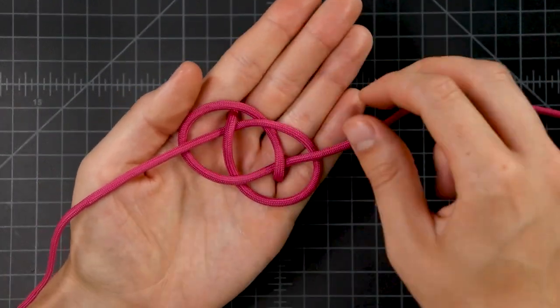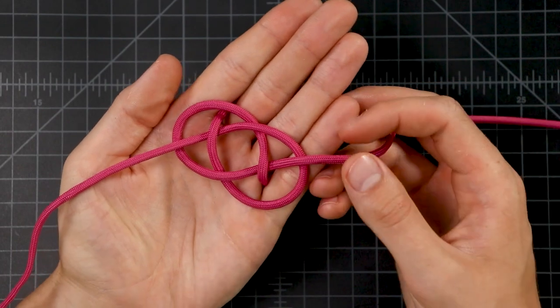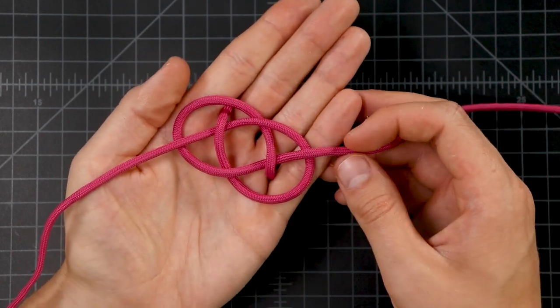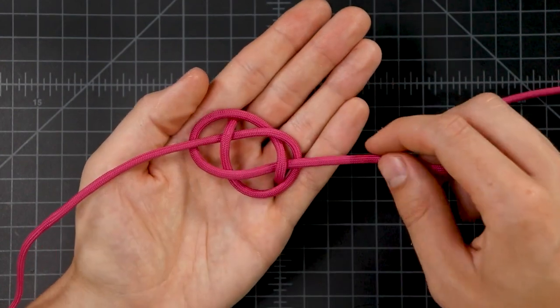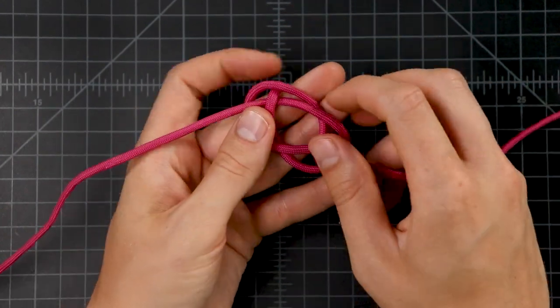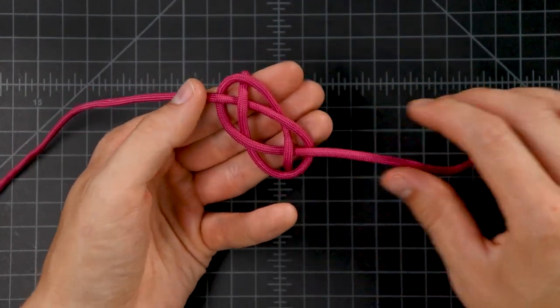That brings us to this paracord bend knot, a nice Celtic looking decorative knot and it also is a pretty strong way of joining two ropes together. We'll move on from that. I like to bring it up to my fingers here, makes it easier to work with.